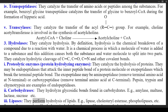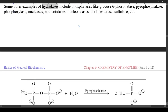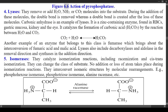(3) Lipases — they perform hydrolysis of lipids; e.g., lipase, cholesterol esterase, phospholipases, etc. Some other examples of hydrolases include phosphatases like glucose-6-phosphatase, pyrophosphatase, phosphorylase, nucleases, nucleotidases, nucleosidases, cholinesterase, sulfatase, etc. Figure 6.6 shows the action of pyrophosphatase.